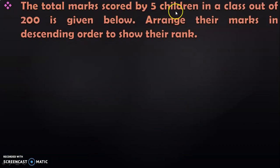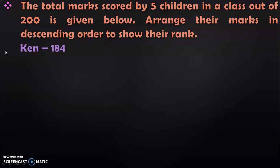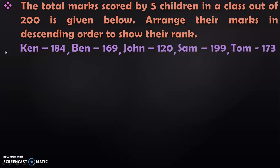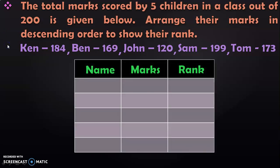Let us move on to the next question. The total marks scored by 5 children in a class out of 200 is given below. Arrange their marks in descending order to show their rank. We have: Ken 184, Ben 169, John 120, Sam 199, and Tom 173. In this question, we are linking two concepts: arranging marks in descending order by comparing numbers, and showing their rank using ordinal numbers — 1st, 2nd, 3rd, 4th, and 5th. So first, let us put them in the form of a table.